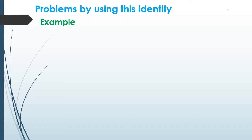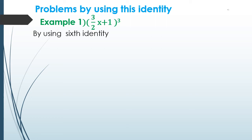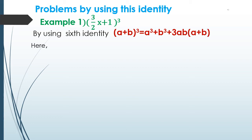Example 1: Expand (3/2 x + 1)³. We will use the sixth identity: (a + b)³ = a³ + b³ + 3ab(a + b), where a = 3/2 x and b = 1.